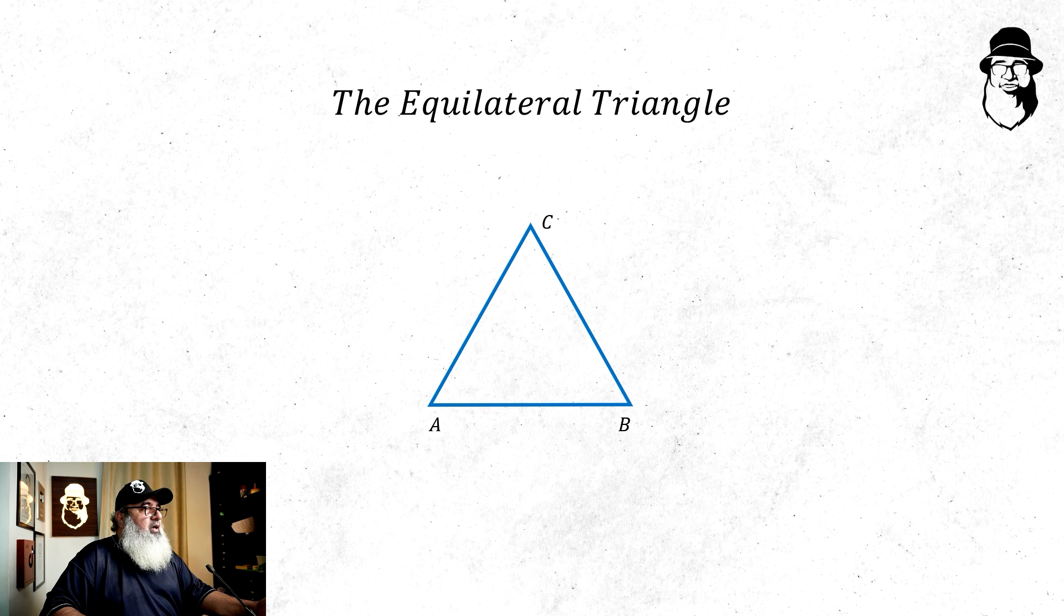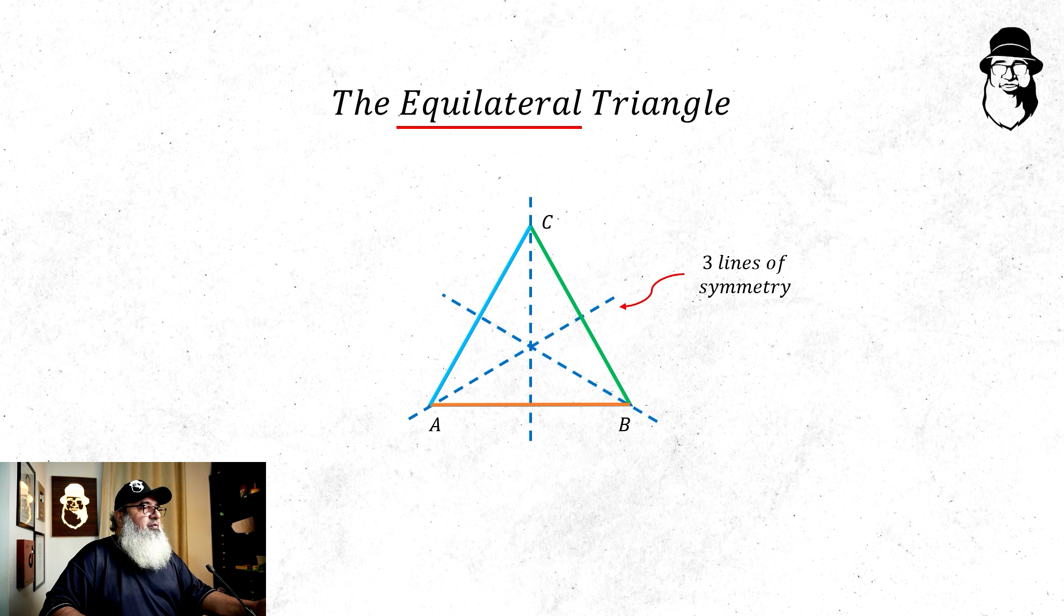A three-sided shape, a triangle is very useful in mathematics. The simplest triangle is the equilateral triangle which has all its sides equal in length. Now this triangle has three lines of symmetry.